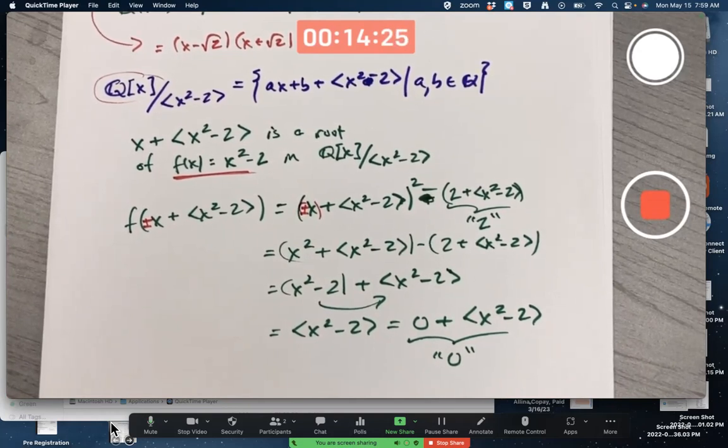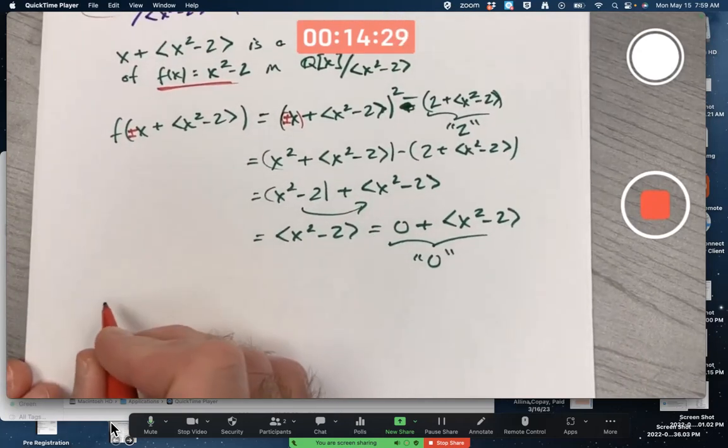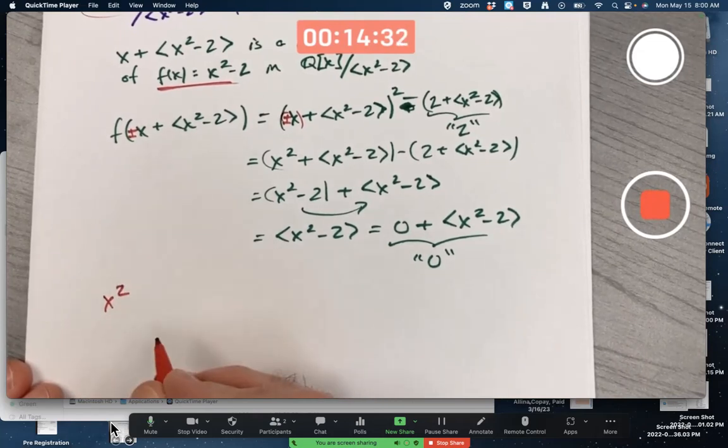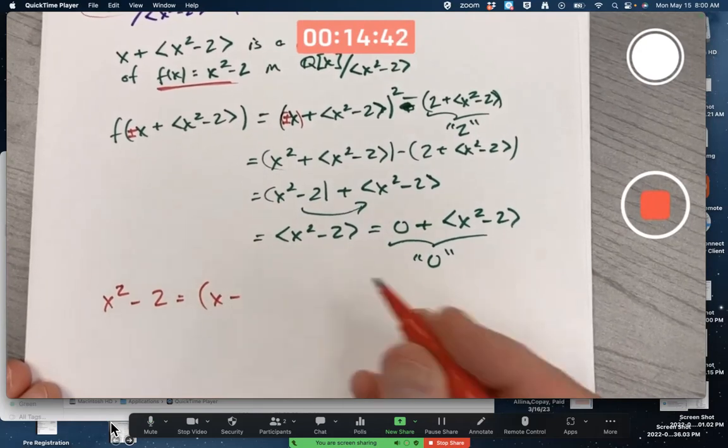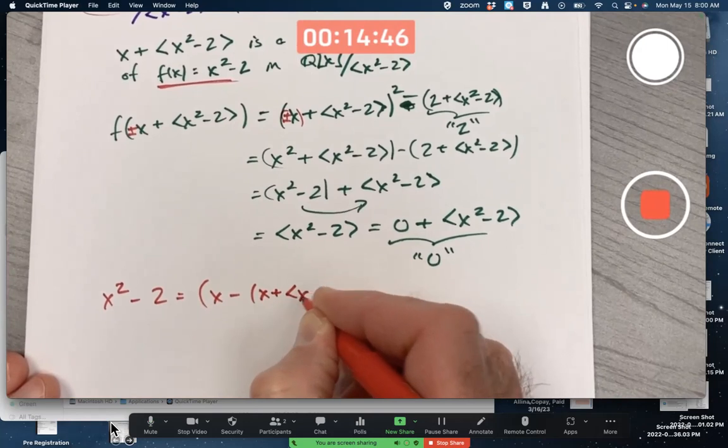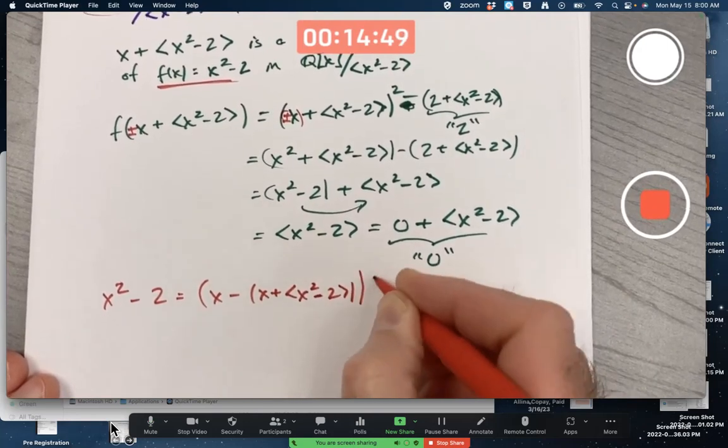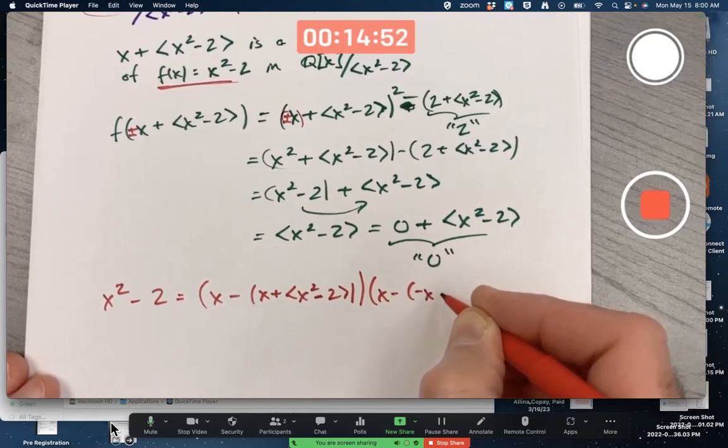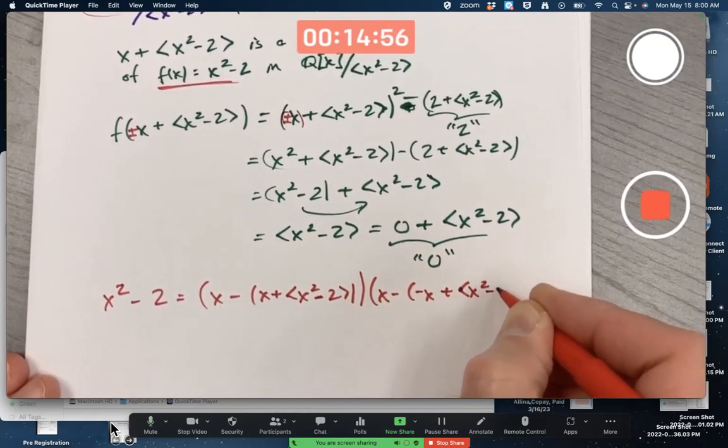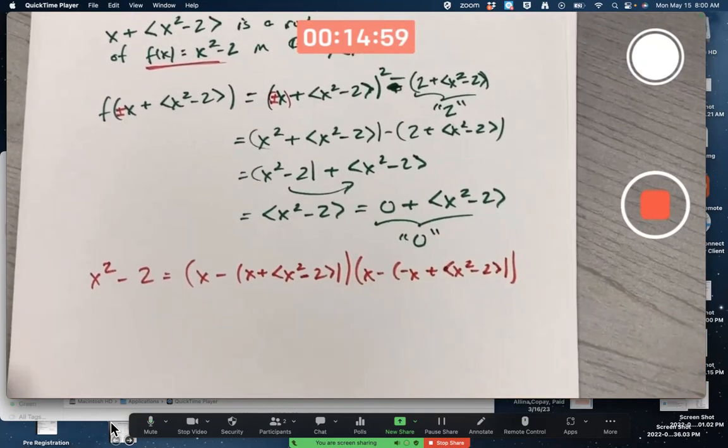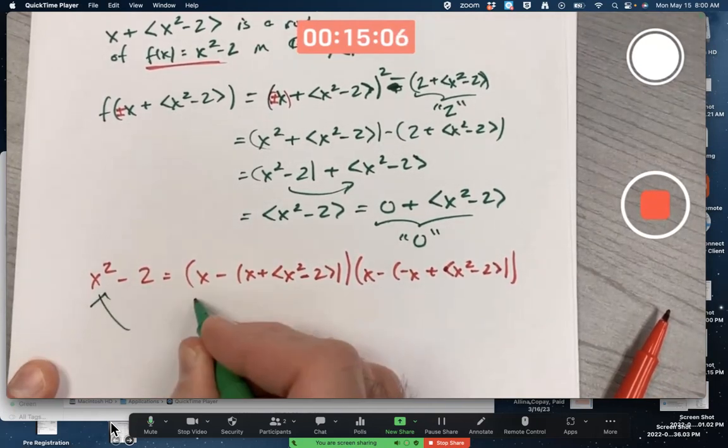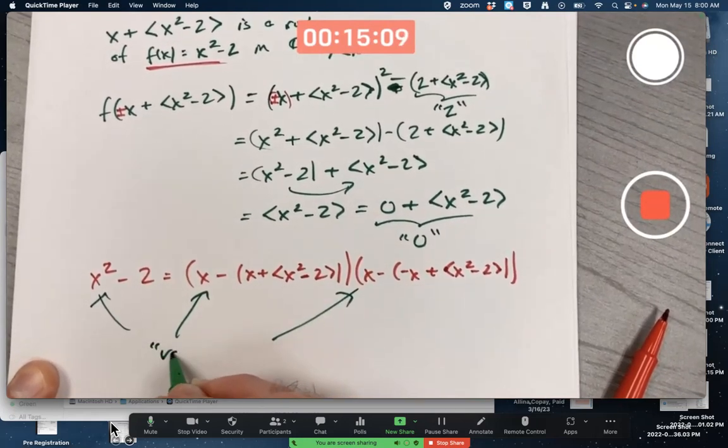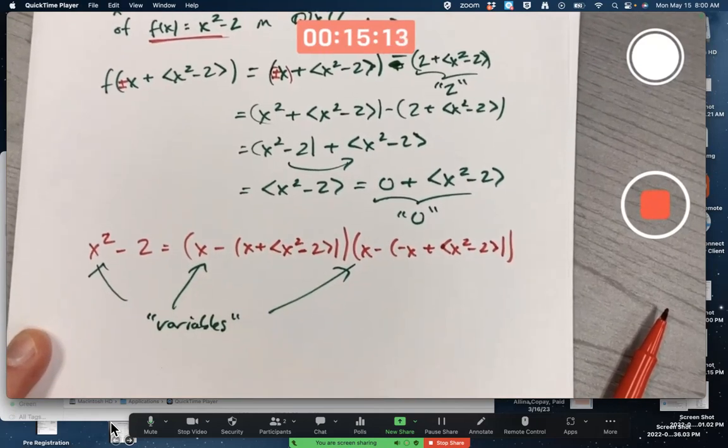So how does f(x) split in this field? How do you factor f(x) in this field? Maybe a little unclear how to write it. Could I write something like this? This is really weird. Is this okay to write? Well, sort of. It's certainly confusing. The x's are playing different roles though. These x's here and here are quote-unquote variables.